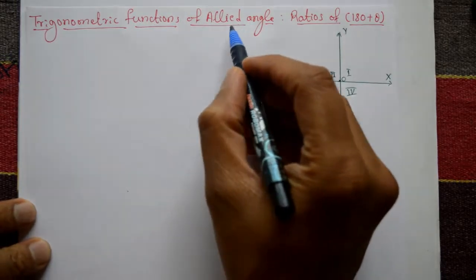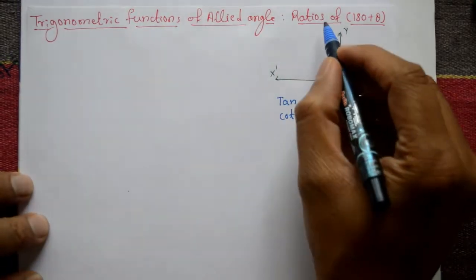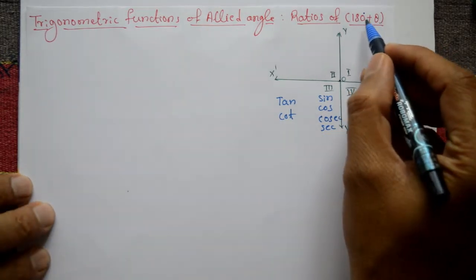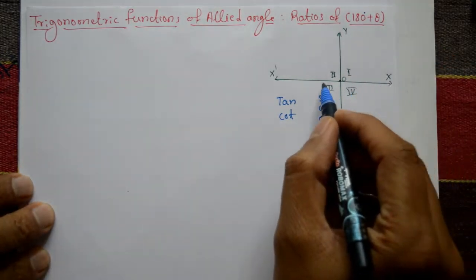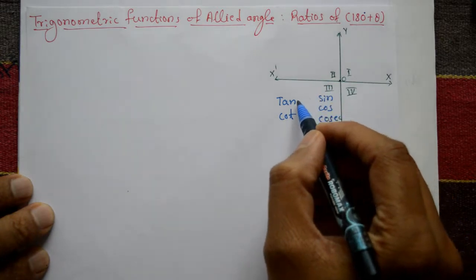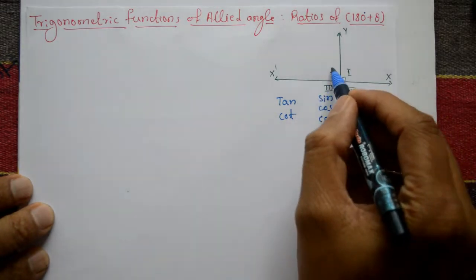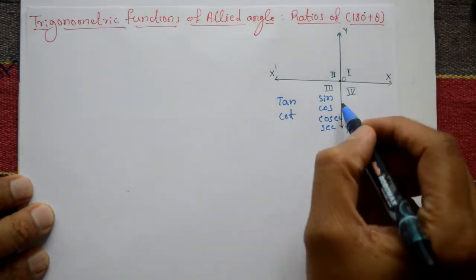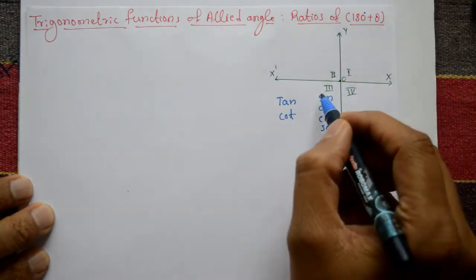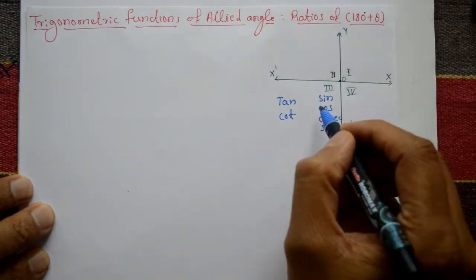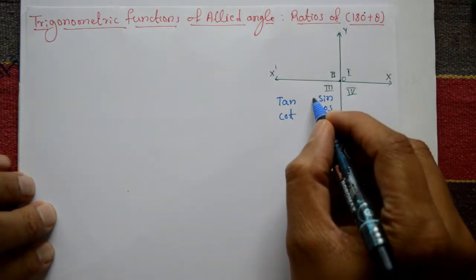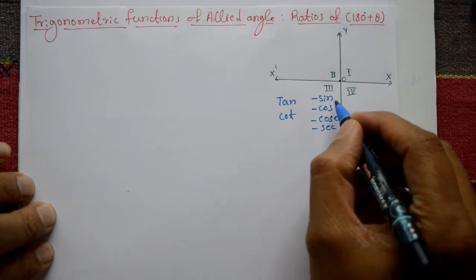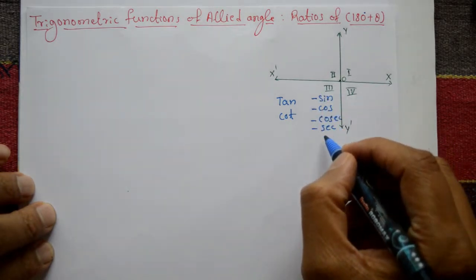Trigonometry functions of allied angles — ratios of 180° plus theta. 180° plus theta means this is the third quadrant. There are four quadrants total, with the x-axis and y-axis. In the third quadrant, sine, cos, cosec, and sec are negative — these ratios are negative.